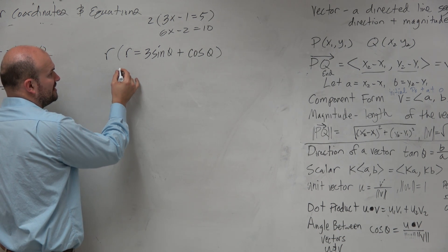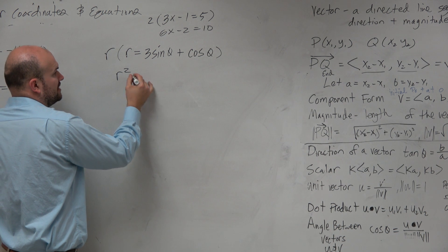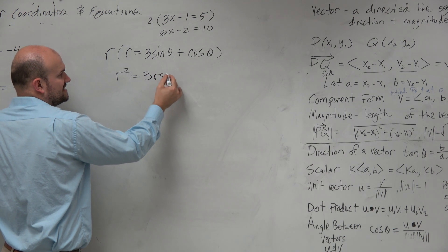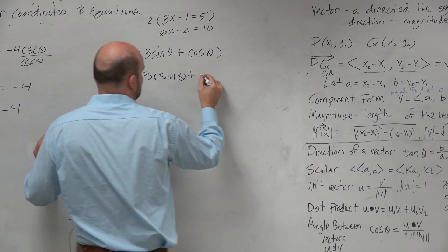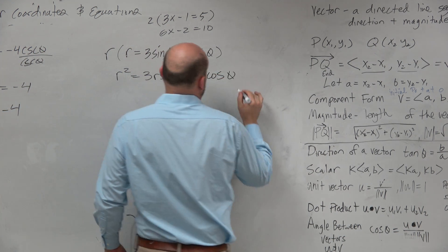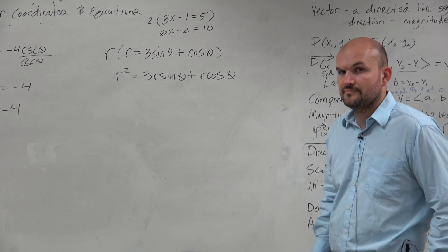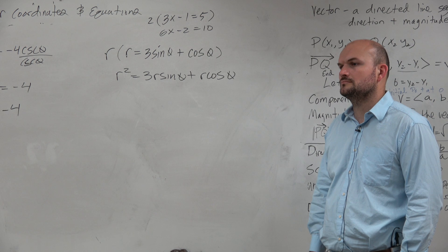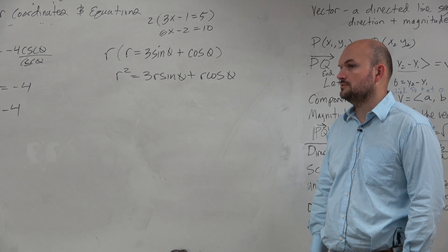But for here, all we're simply doing now is now we get r squared equals I'm going to instead of multiplying by r, I'm going to put the r next to the sign. So it's easy for me to visualize that. Good.